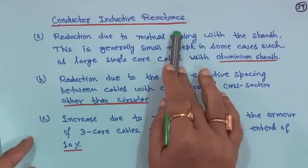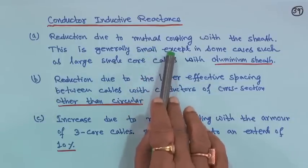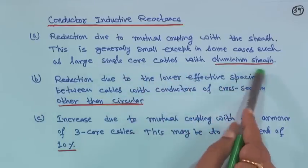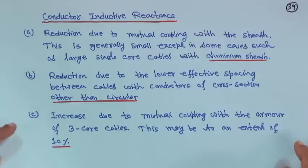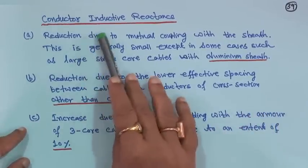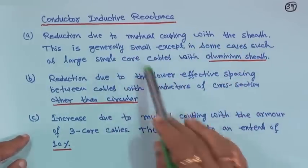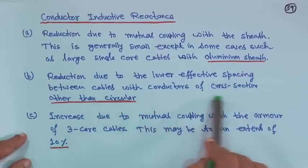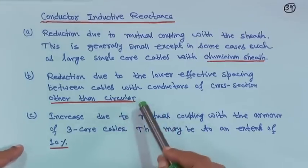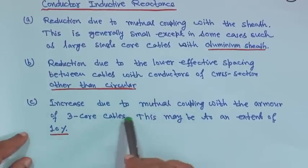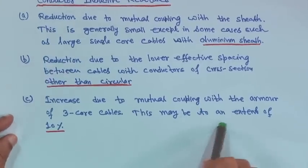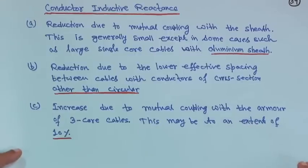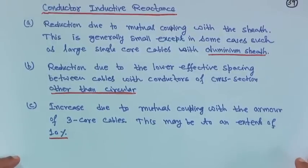Next is conductor inductive reactance. Reduction due to mutual coupling with the sheath is generally small, except in some cases such as large single core cables with aluminium sheath. Reduction also occurs due to lower effective spacing between cables with conductors of cross section other than circular, but generally circular conductors are used. Increase due to mutual coupling with the armour of 3-core cables may be to an extent of 10 percent — naturally if mutual coupling is there, inductance will increase.